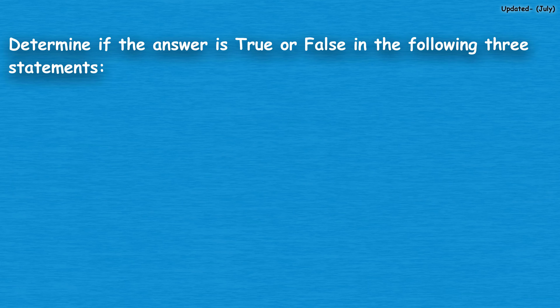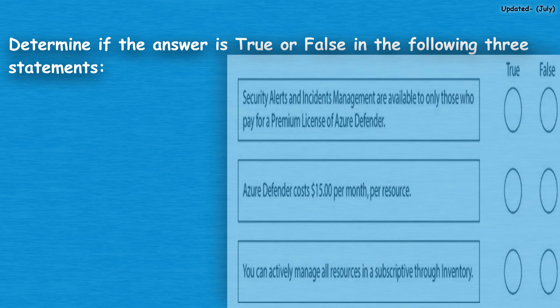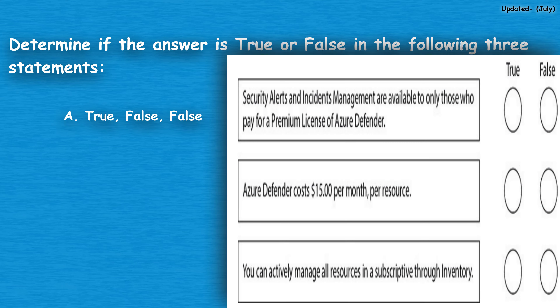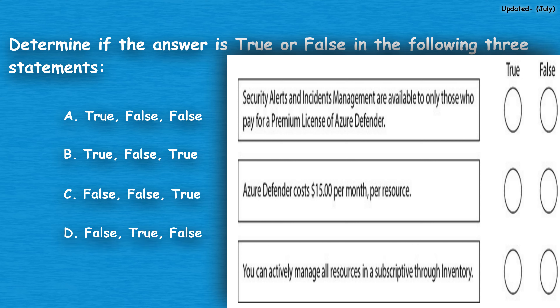The next question: determine if the answer is true or false in the following three statements. Option A: true, false, false. Option B: true, false, true. Option C: false, false, true. Option D: false, true, false.